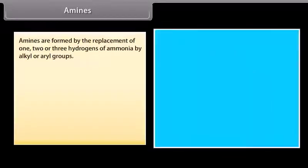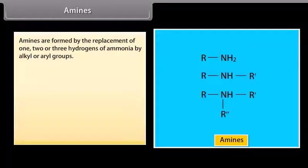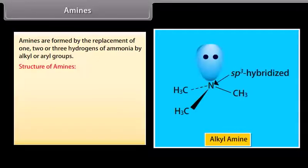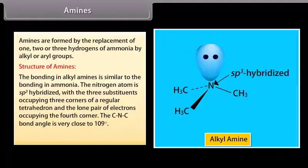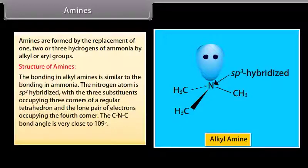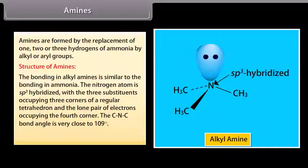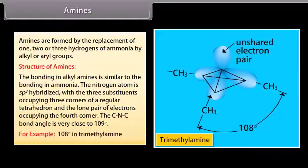Amines are formed by the replacement of 1, 2, or 3 hydrogens of ammonia by alkyl or aryl groups. The bonding in alkyl amines is similar to the bonding in ammonia. The nitrogen atom is sp3 hybridized with the 3 substituents occupying 3 corners of a regular tetrahedron and the lone pair of electrons occupying the 4th corner. The CNC bond angle is very close to 109°, for example 108° in trimethylamine.